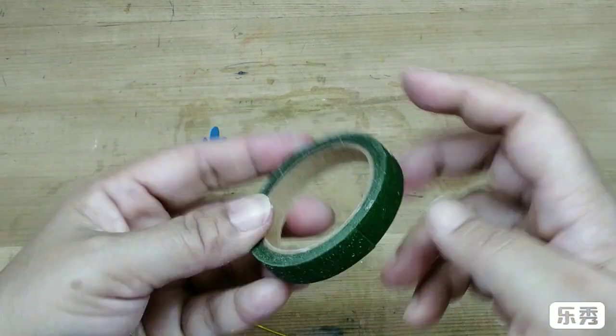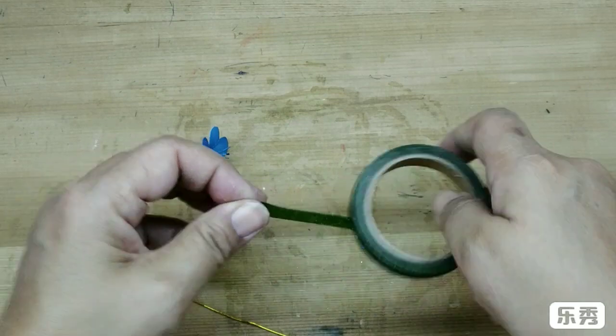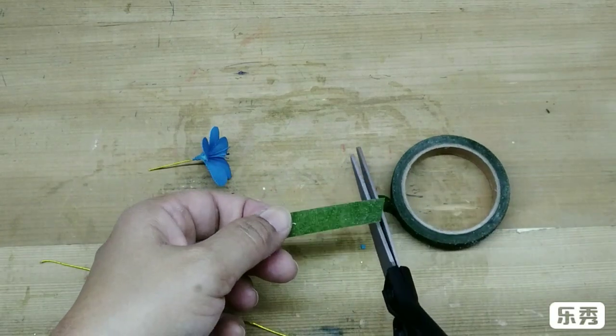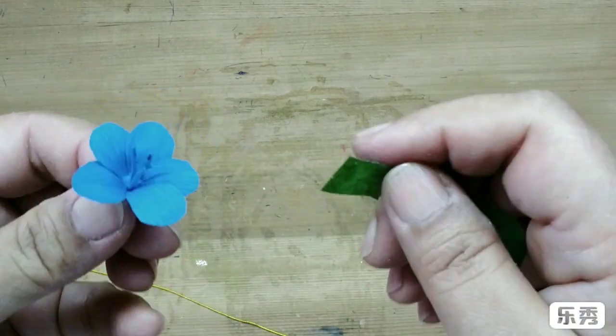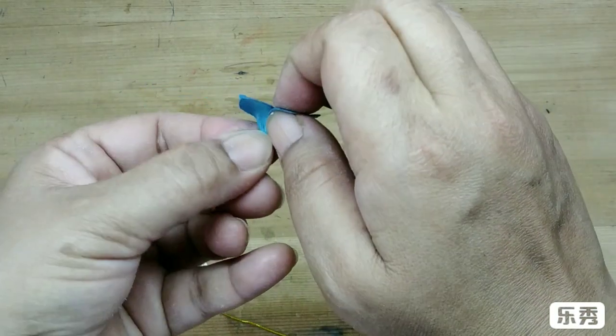Take some green tape, stretch it and widen it at the base of the flower.